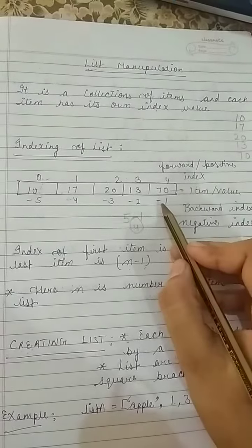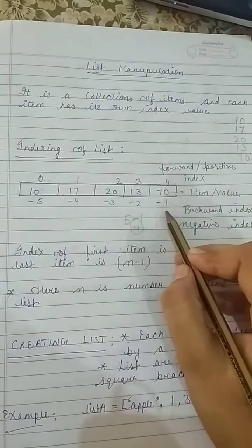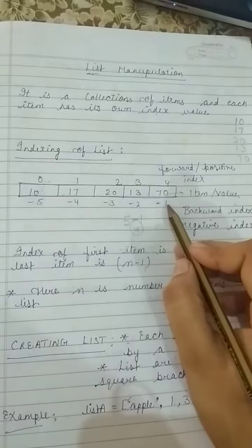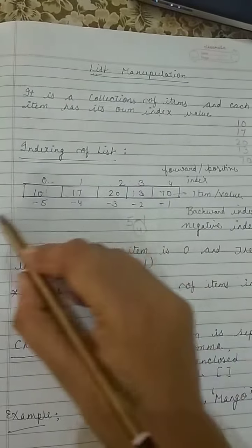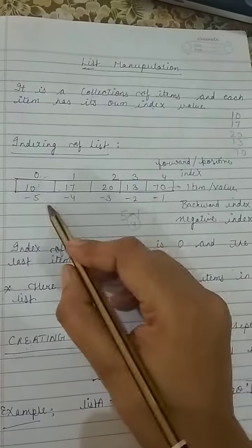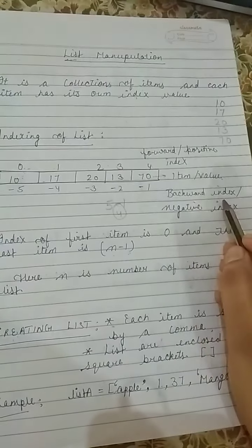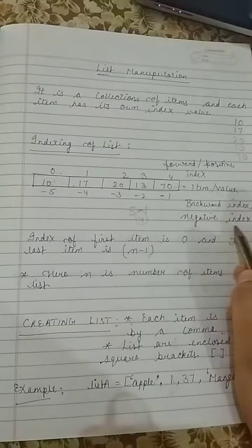Similarly, if we start with minus 1, last item ko hum minus 1 index value dete hai. And it decreases by 1: minus 2, minus 3, minus 4, and so on. This type of index value is known as backward index or negative index.